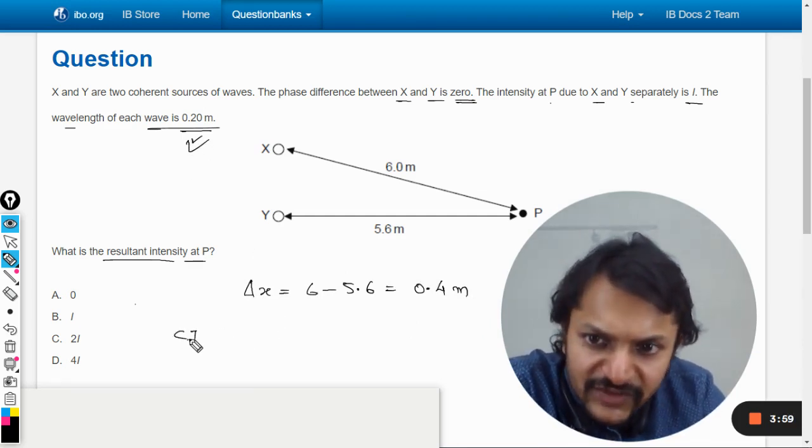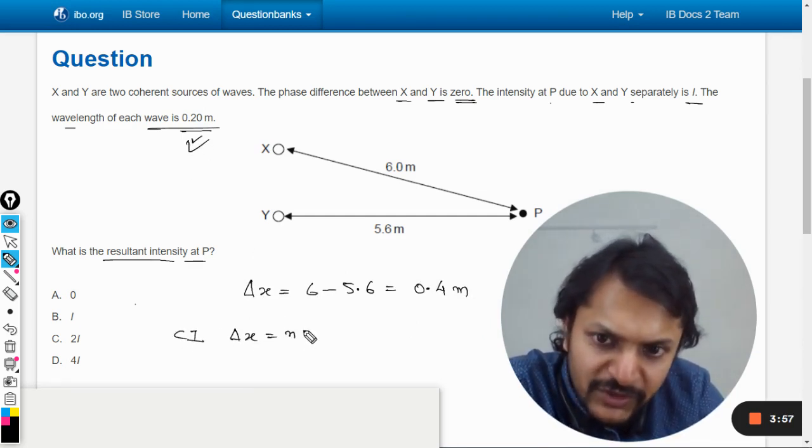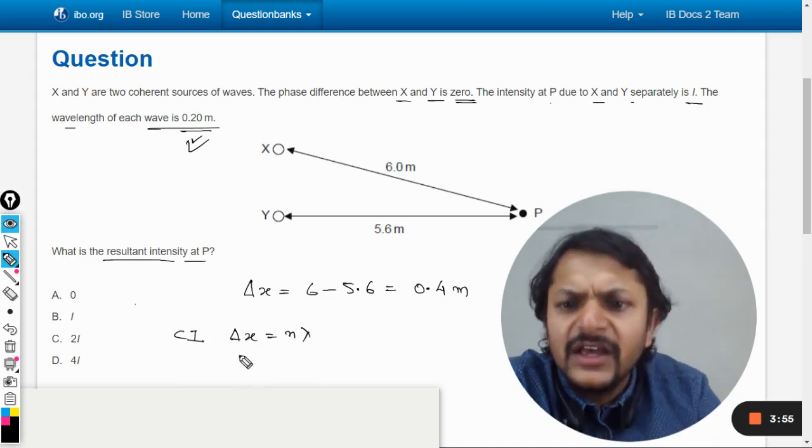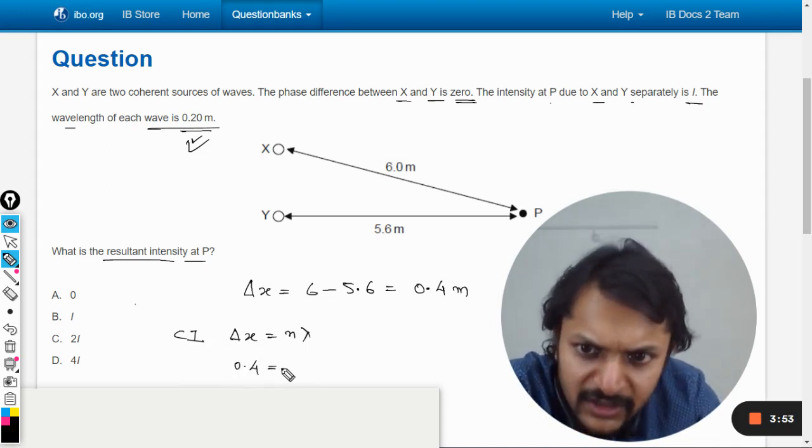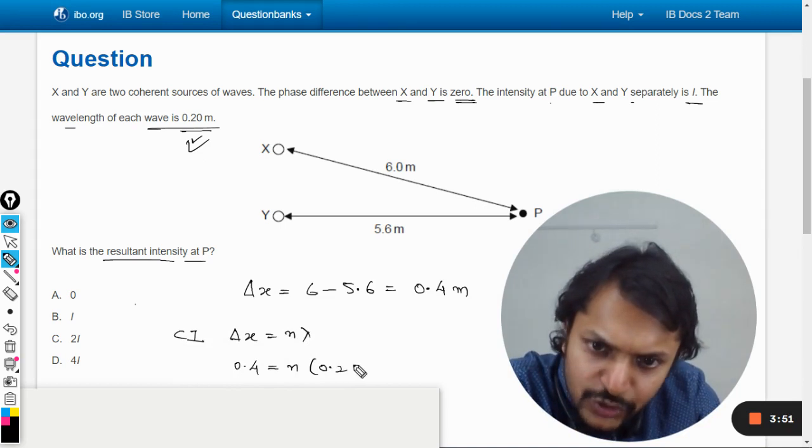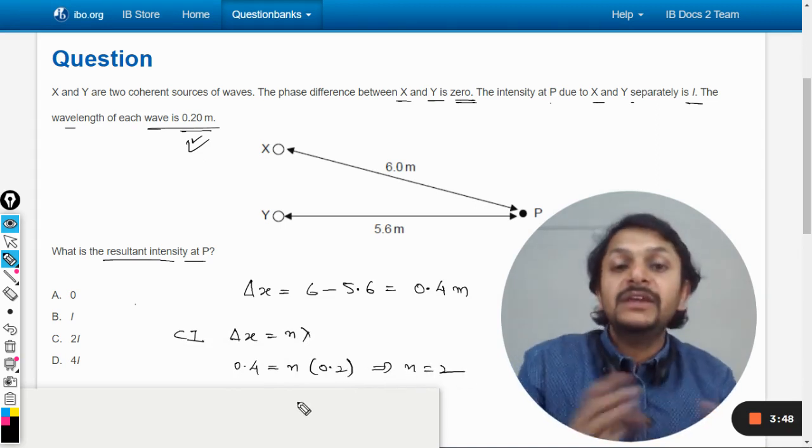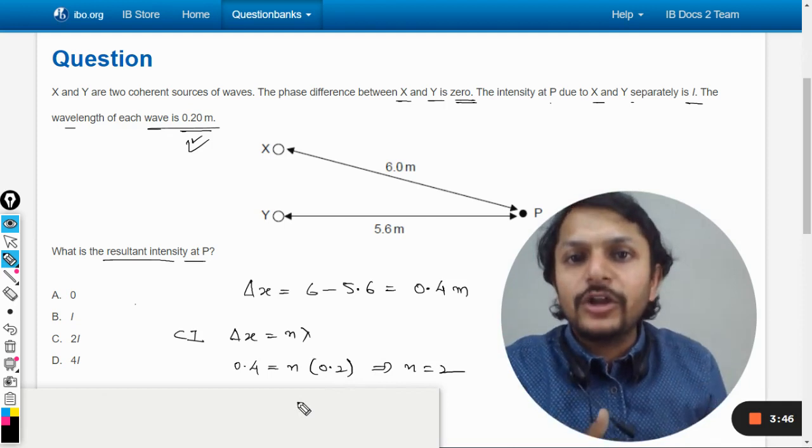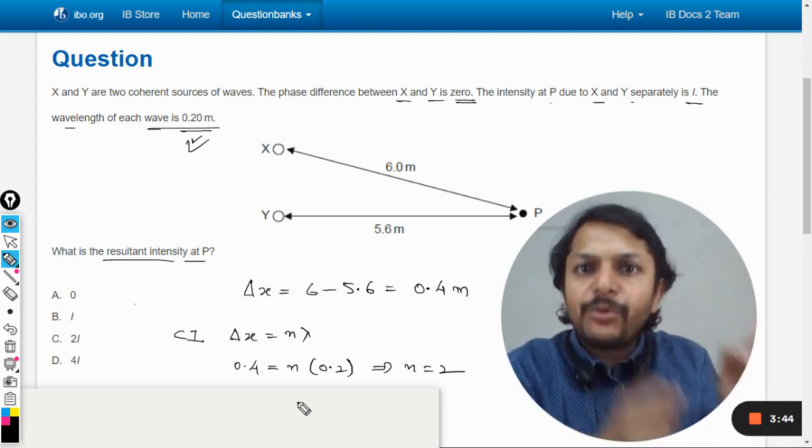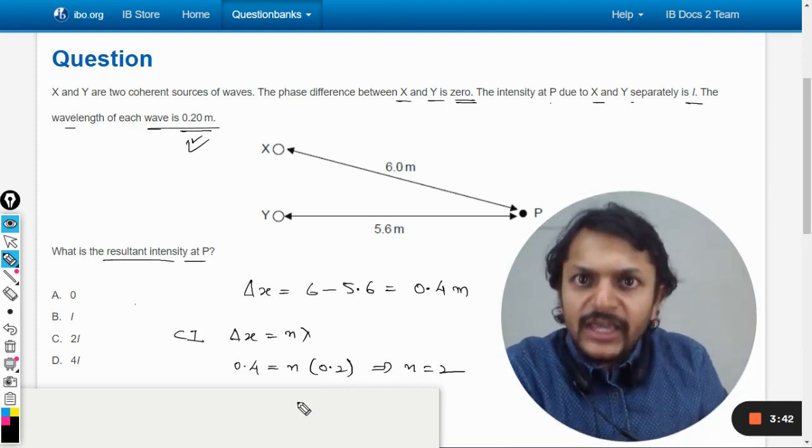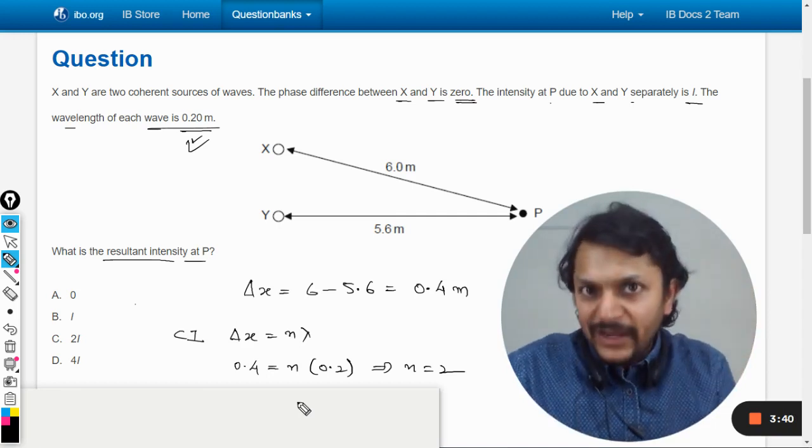So for constructive interference the path difference should be equal to the integral multiple of a wavelength. Let us verify is it happening. N times 0.2. And yes indeed N is coming out to be 2. It means they are literally talking about the second bright fringe if it was an interference pattern.